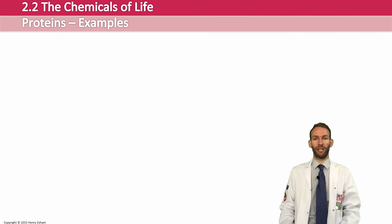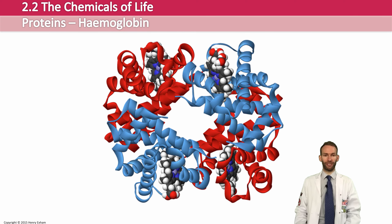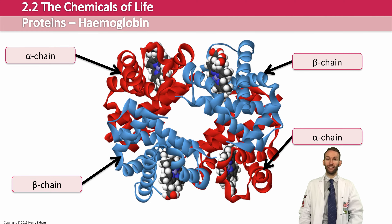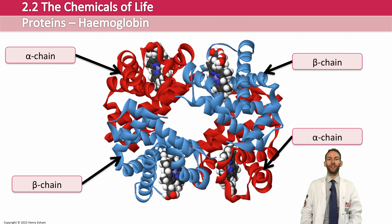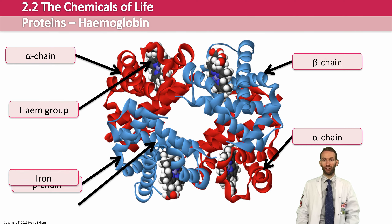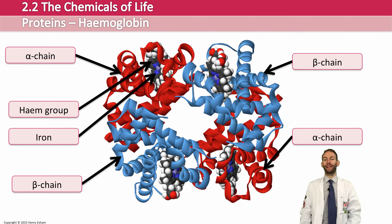The first protein example we're going to look at is hemoglobin. Hemoglobin is an example of a globular protein. It has four polypeptide chains joined by disulfide bonds, which means it's an example of a protein with quaternary structure. Each chain is arranged around a heme group which contains an iron molecule — Fe2+ iron — and it's that iron molecule that can bind with oxygen, picking up oxygen, which is the main function of hemoglobin in our red blood cells.